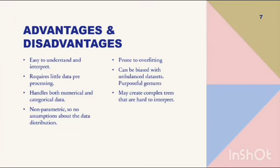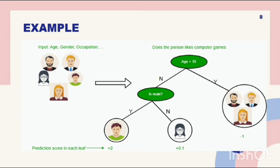These are the different advantages and disadvantages of a decision tree. It is an example for predicting whether a person likes computer games or not.